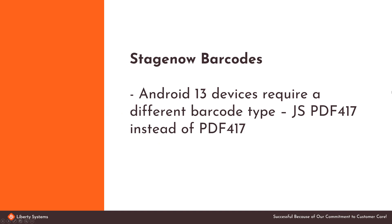Android 13 devices require a different provisioning barcode. Therefore, if you use StageNow barcodes to configure your devices, you will need to be able to create this new format — JSPDF417 instead of PDF417.